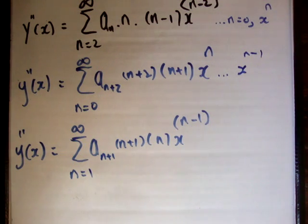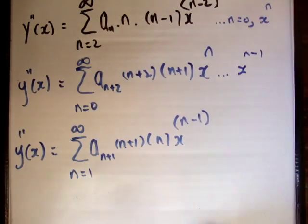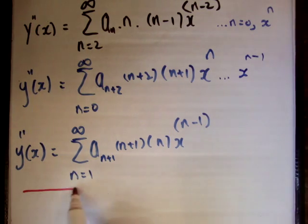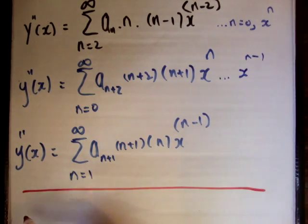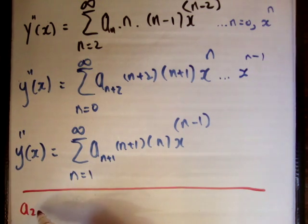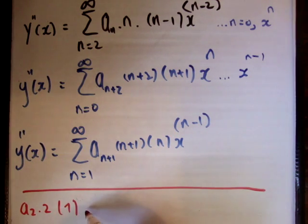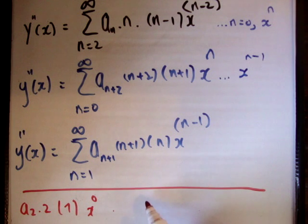Now the question is, are these the same? The only way to find out are these the same is by filling out the power series. So let's look at this power series here. So we're starting at n is equal to 2. So we have a2, times 2, times 1, times x to the 0. So we have 2a2.